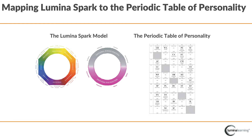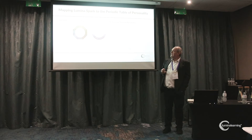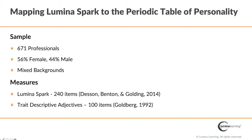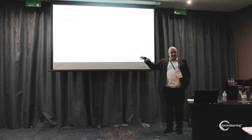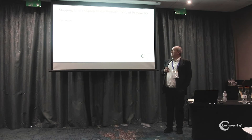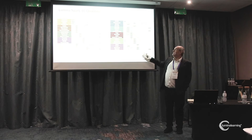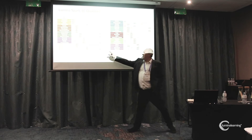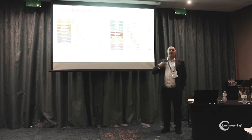Now onto the periodic table mapping. You can see five across the top representing the Big Five, split into ten at both ends on the vertical. In my analysis I break it into a 10-by-10 because Spark measures both ends, going from a 5-by-10 to a 10-by-10. The sample was 671 people with a reasonable gender split, generally professional backgrounds — not a student population. The Spark questionnaire had 240 items alongside Goldberg's 100 Trait Descriptive Adjectives. We hypothesized that the 40 qualities would load primarily or secondarily onto the expected factors.